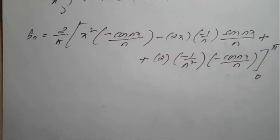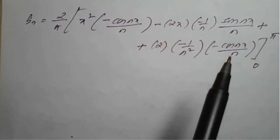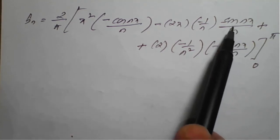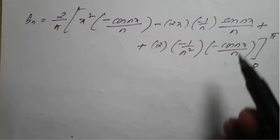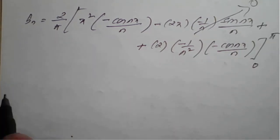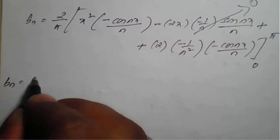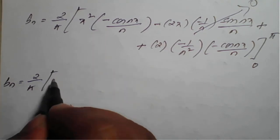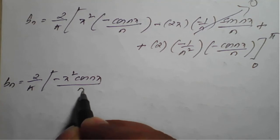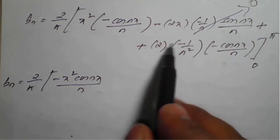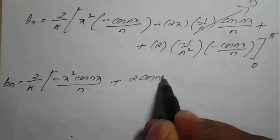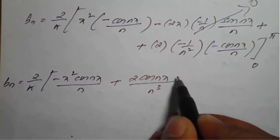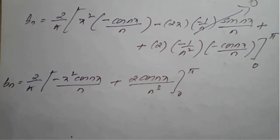Before simplifying, note that the middle term contains sine(nx). Since sine(n·pi) = 0 and sine(0) = 0, the middle term completely vanishes when applying the upper and lower limits. Therefore, b_n = (2/pi) times: the first term minus x² cos(nx)/n, and the third term becomes plus 2 cos(nx)/n³, evaluated from 0 to pi.